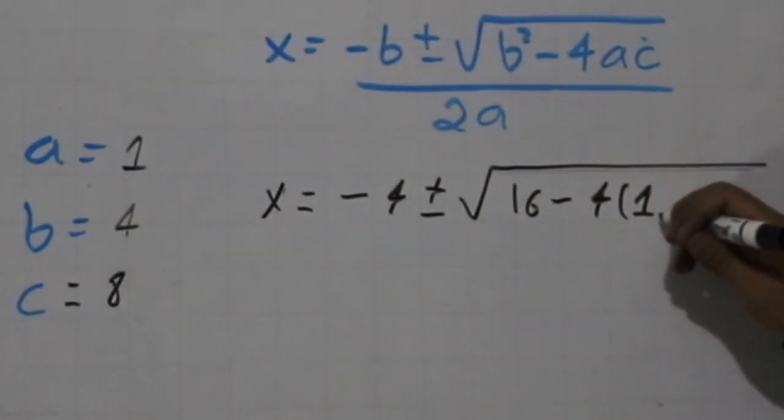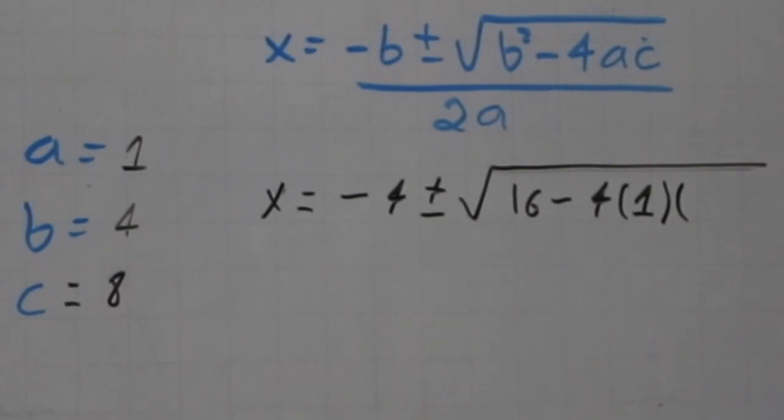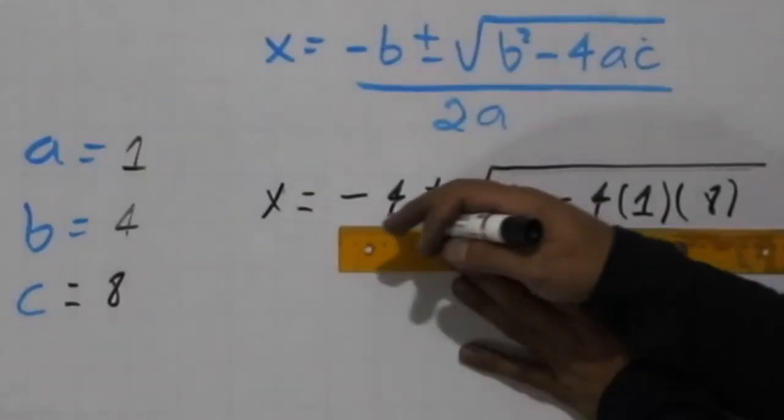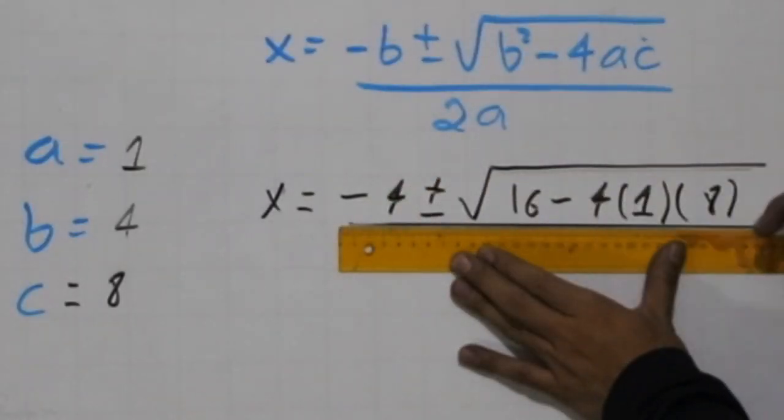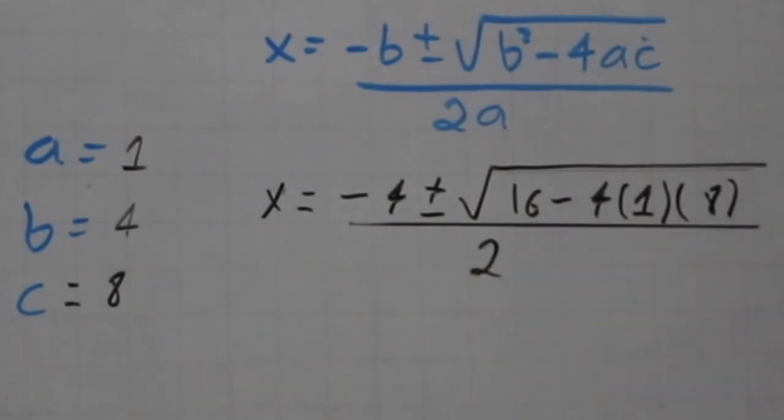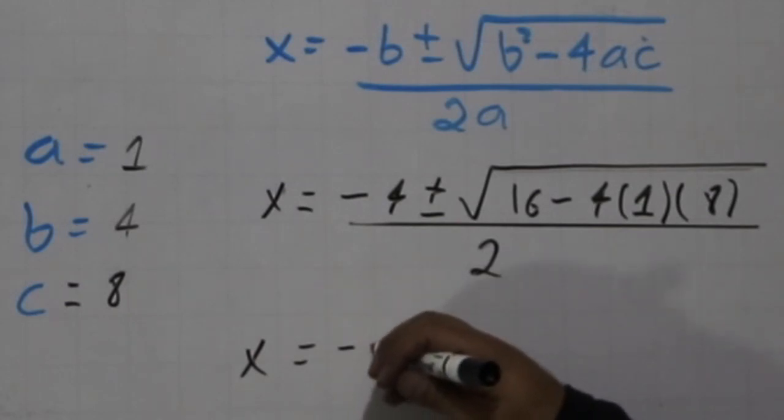Minus 4a. A is the number 1, so we don't need to do this, but for clarity, we have -4(1) times c, that's 8, and all that over 2a. So we have x = -4 / 2, that's -2, plus or minus.